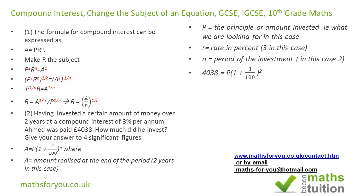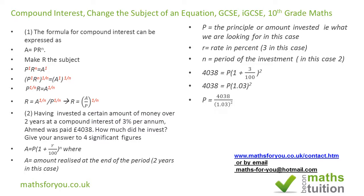We get 4038 equals P times (1 plus 3 over 100) squared. Since 3 over 100 is 0.03, this becomes 4038 equals P times 1.03 squared. Dividing both sides by 1.03 squared, we get P equals 4038 divided by 1.03 squared.